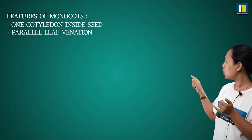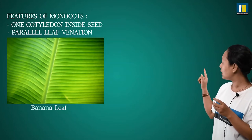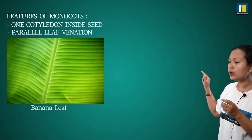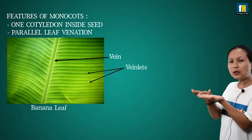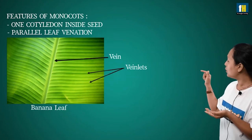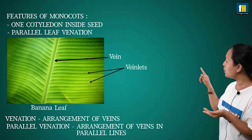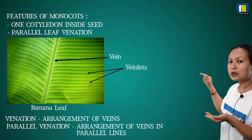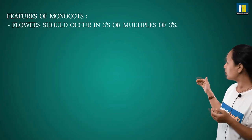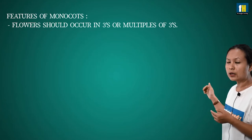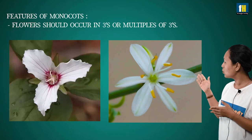Another feature of monocots is parallel leaf venation — the veins in the leaves run parallel to each other. When you look at the arrangement of veins, they are parallel to one another. Additionally, in monocots, the flowers occur in threes or multiples of three.